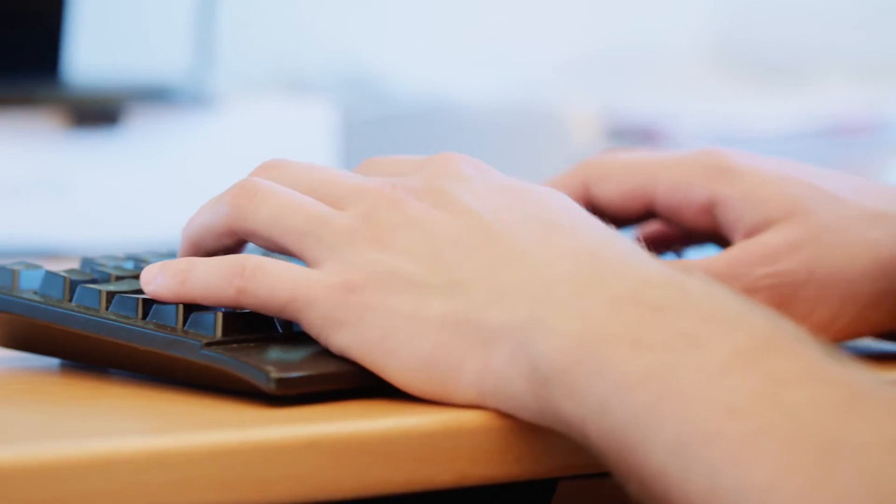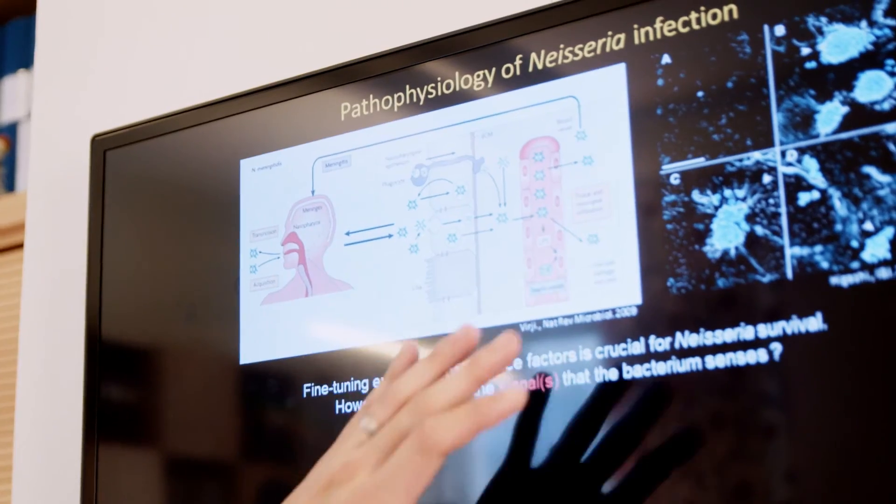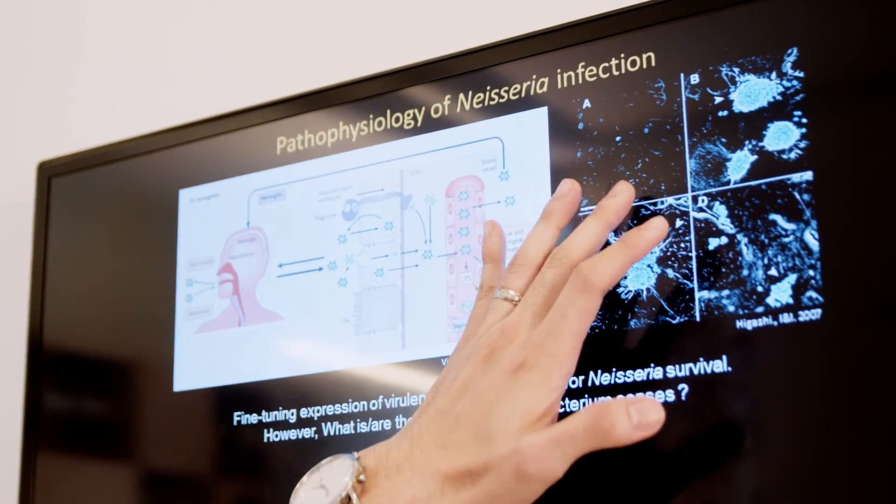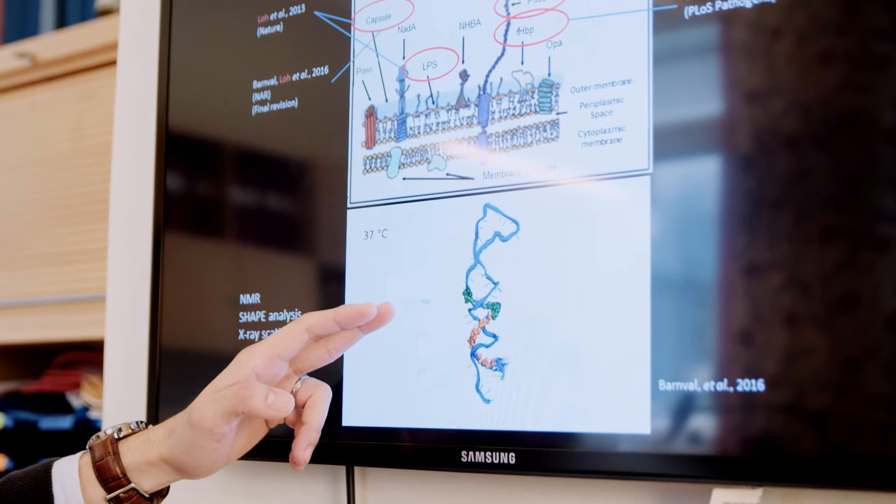You can imagine the bacteria is living inside our nose, so it goes through quite a lot of the physical stress factors that we humans also go through. We discovered that an RNA senses small temperature changes in Neisseria that is able to protect the bacteria from being killed by the immune system. And this small RNA is the one that controls the capsule production.